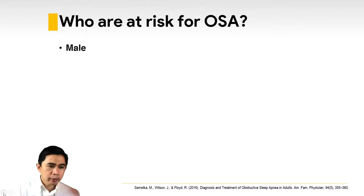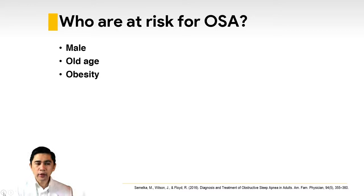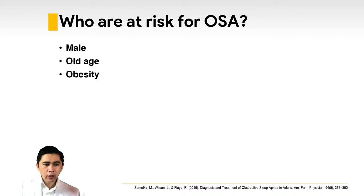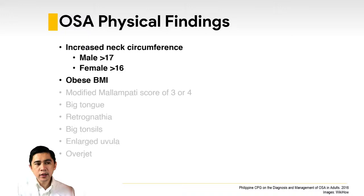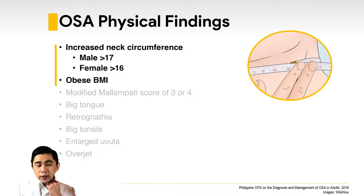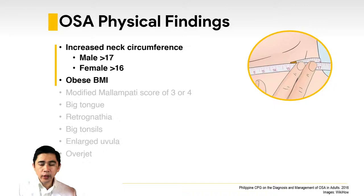Who is at risk for obstructive sleep apnea? Usually males, older males, and those who are obese. You have three times the chance of having OSA if you are male, and an increased risk if you reach the age of 60. Typical OSA physical findings include an increased neck circumference: greater than 17 inches for males and 16 inches for females, and those in the obese BMI category. Note that BMI categories differ between Asian and Caucasian populations.